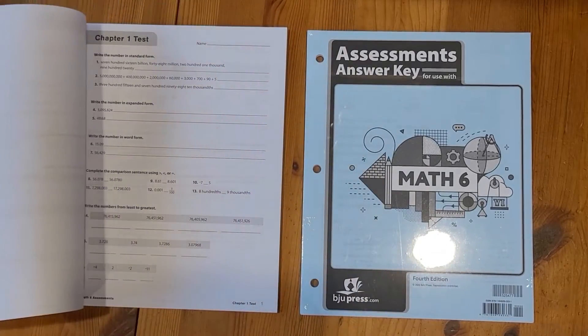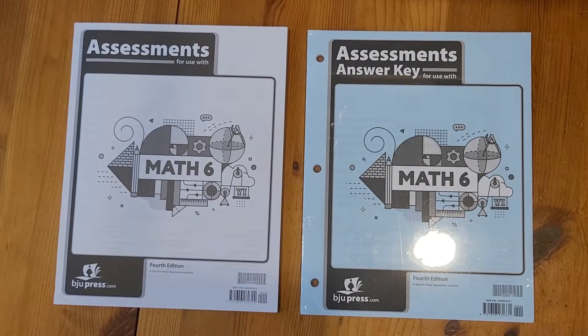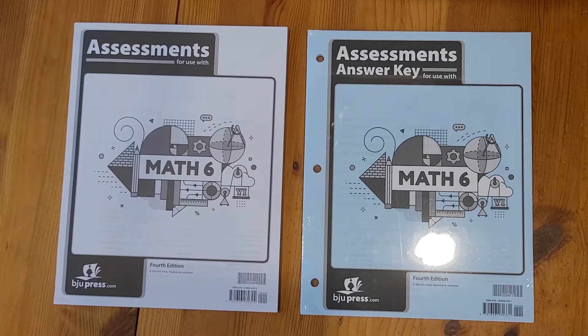So the assessment packet would have the tests in it, and any of the quizzes that you would need to go along with those chapters. And then the assessment answer key would have all the answers that you need for those quizzes and the tests.